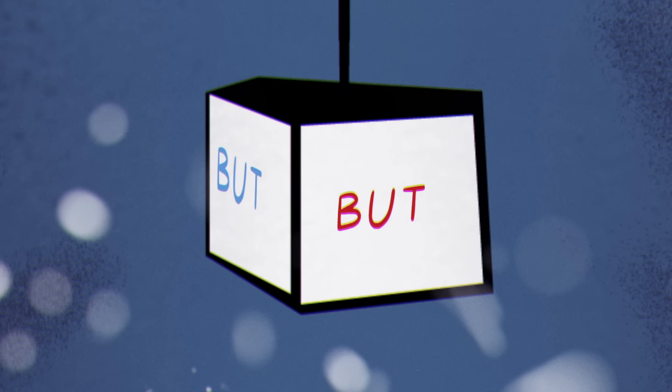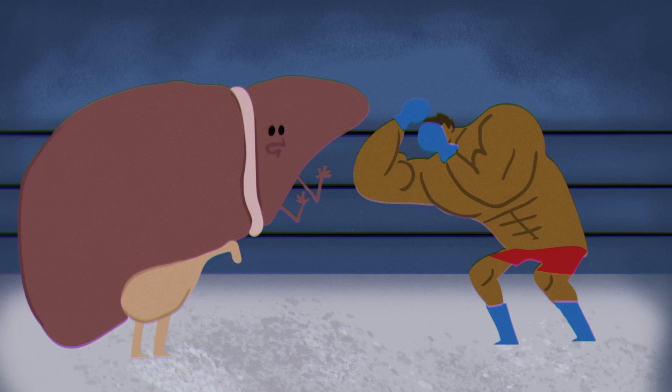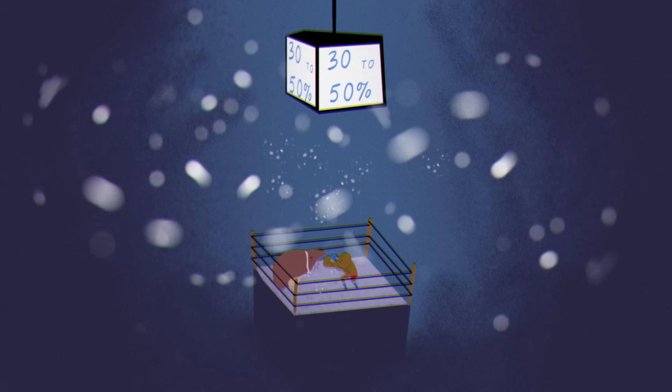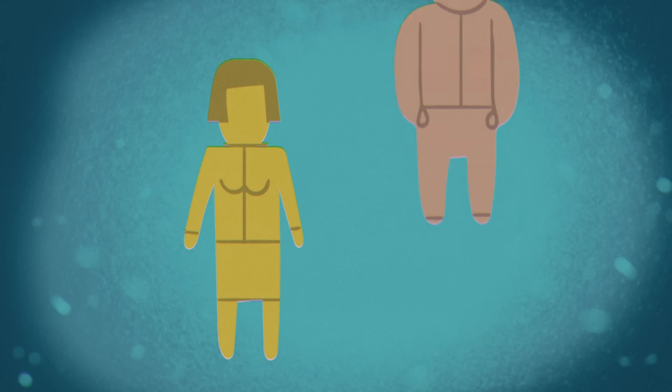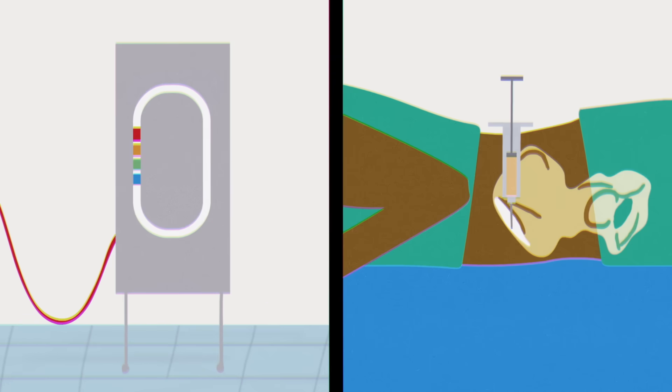But bone marrow transplants also come with risks, including graft-versus-host disease. It happens when the immune system generated by the donor cells attacks the patient's organs. This life-threatening condition occurs in about 30-50% of patients who receive donor cells from anyone other than an identical twin, particularly when the stem cells are collected from the blood as opposed to the bone marrow.